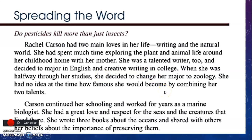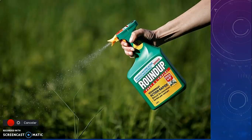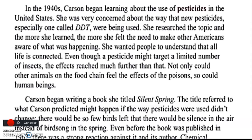She studied marine life and had a great love and respect for the seas and the creatures that live there. She wrote three books about the ocean and shared with others her belief in the importance of preserving them. Carson's philosophy was about caring for the world and its natural resources. In the 1940s, Carson began to learn about the use of pesticides in the United States.